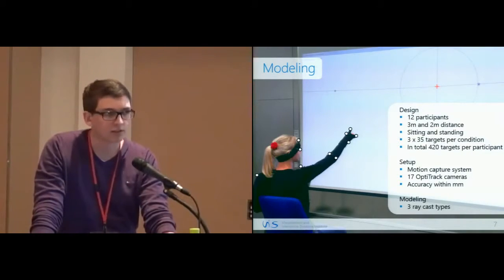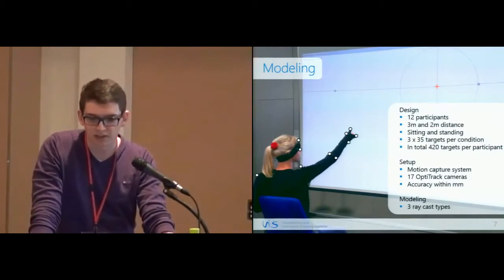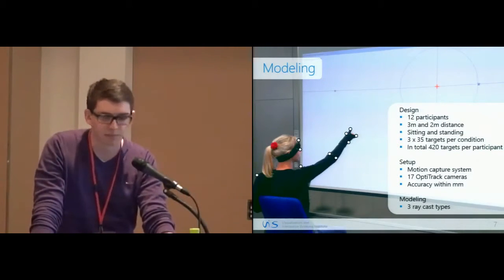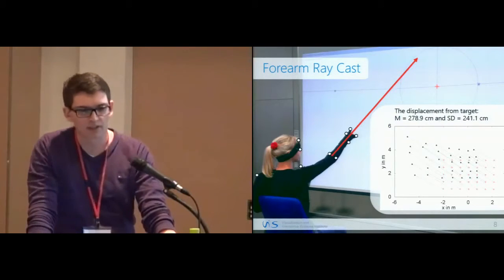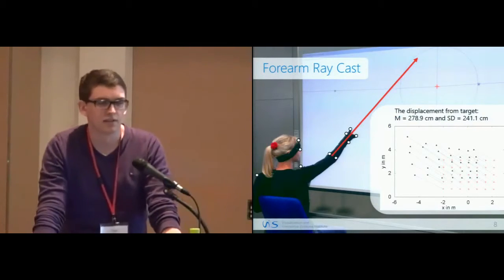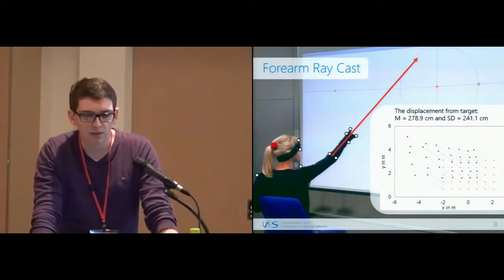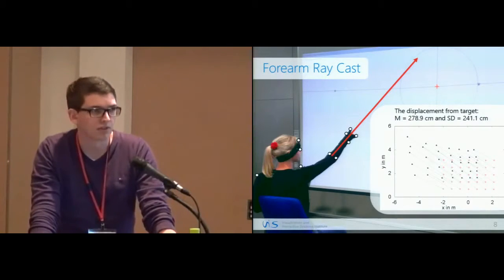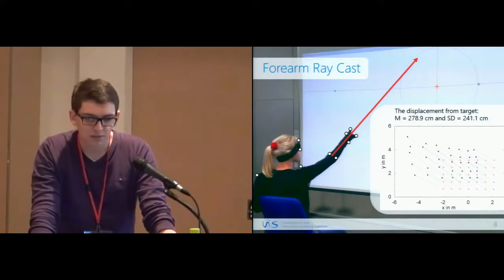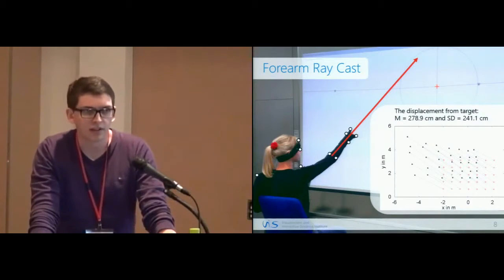We attached markers to the participants so that we could afterwards calculate three different raycasting types. The first raycasting type was forearm raycasting. We used two markers at the elbow and two at the wrist. The average distance between the intersection point of the raycast and the target was roughly 3 meters.